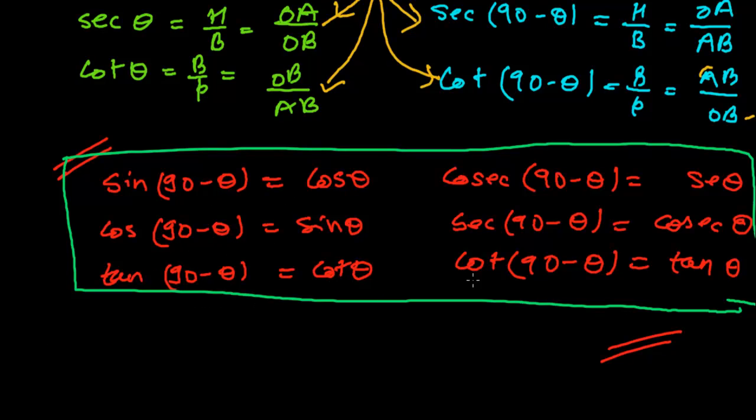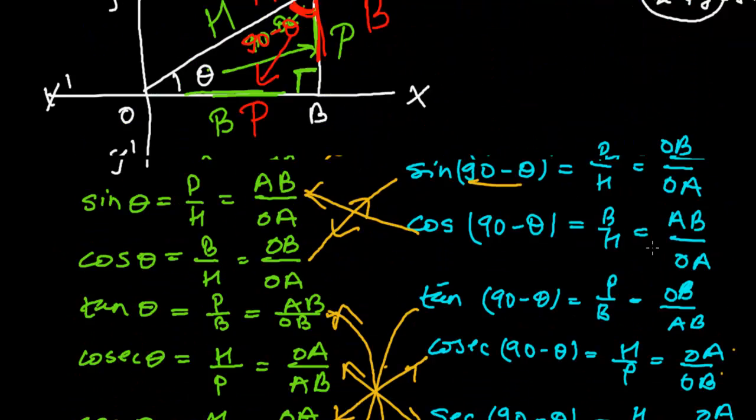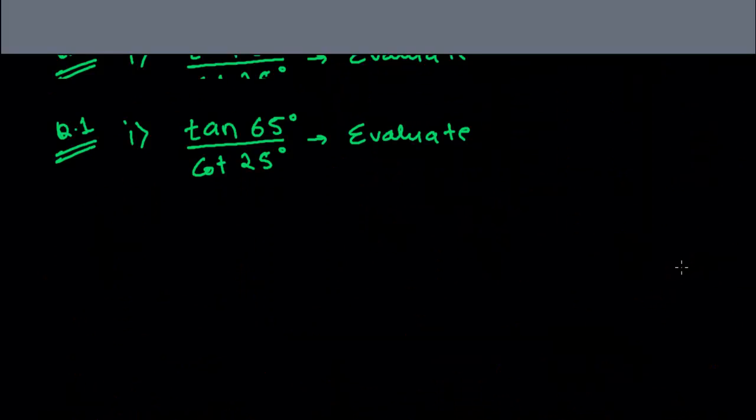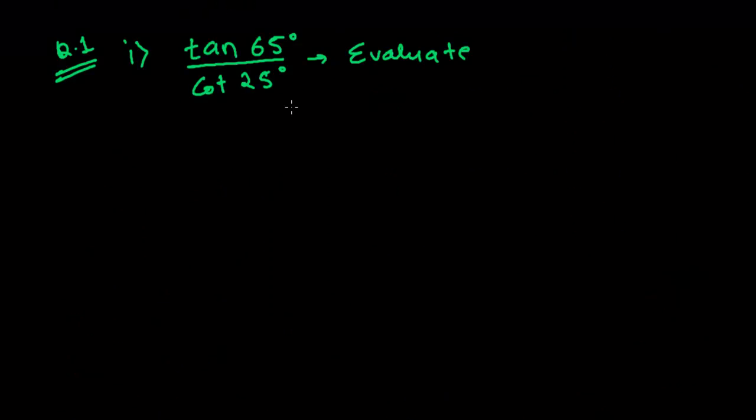Tan(90° - θ) = cot θ and so on. There are six formulas in total. Now we have to use these trigonometric relationships in this evaluation. Let's evaluate tan 65° upon cot 25°. How to do this? First, when you add 65 and 25, how much is it? Let's see, 5 plus 5 is 0, 6 plus 2 is 8, and carry over 1.